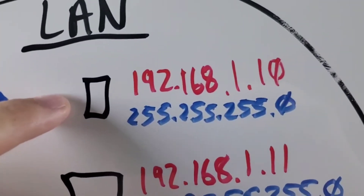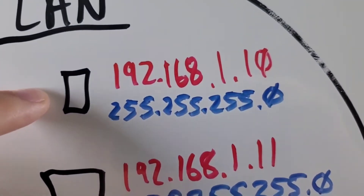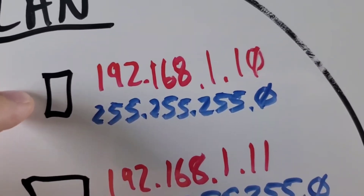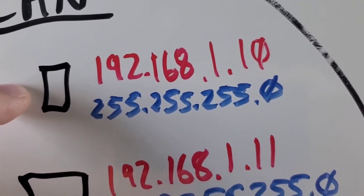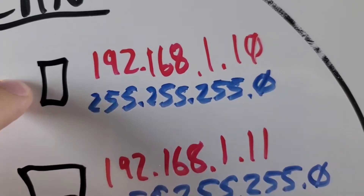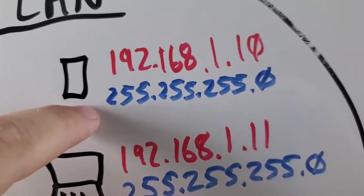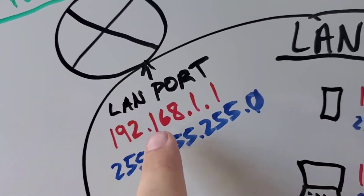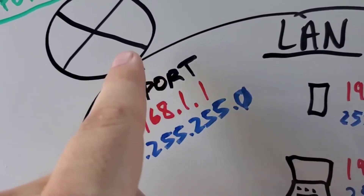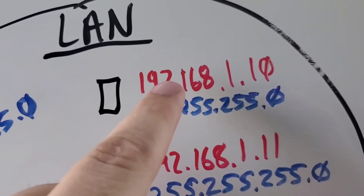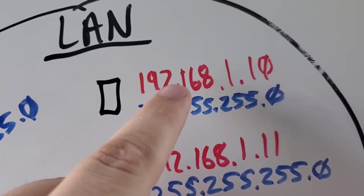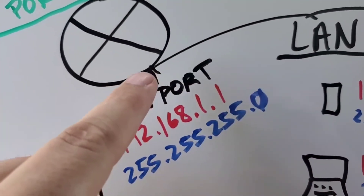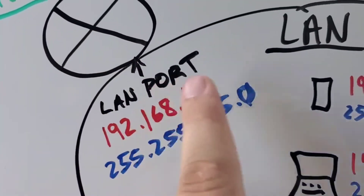So for this phone, 192.168.1.10 would be the IP address, 255.255.255.0 would be the subnet mask, and the default gateway would be 192.168.1.1 because that's the router. In order to get to the internet, where do you go? You go to the default gateway — you go to the router. That's how you get to the internet.